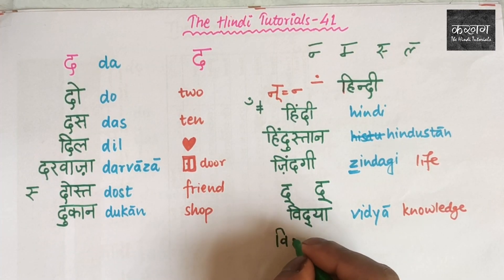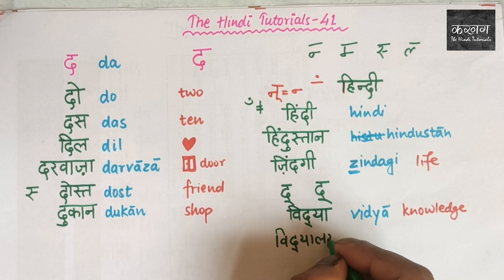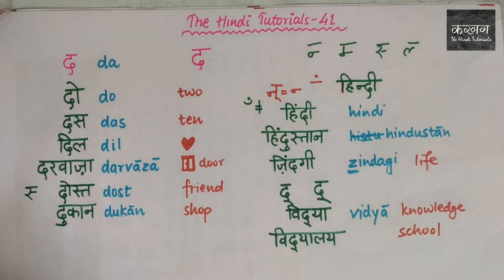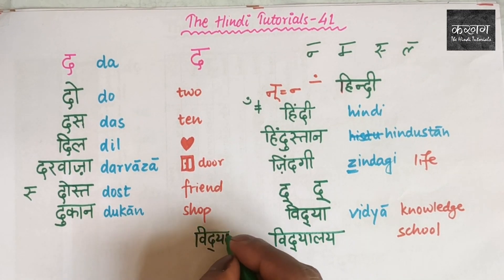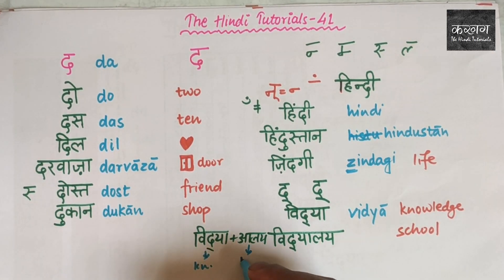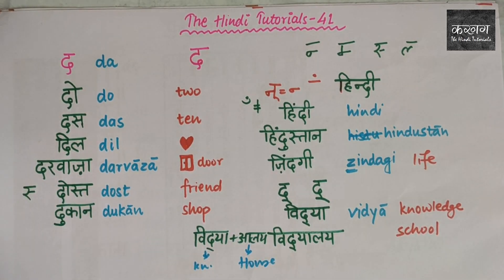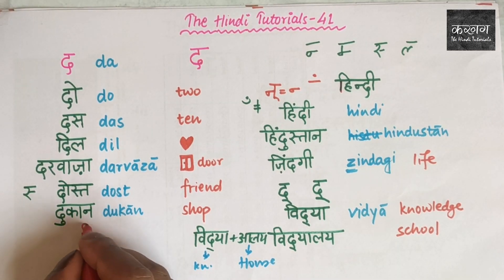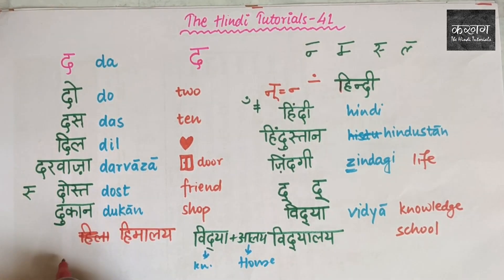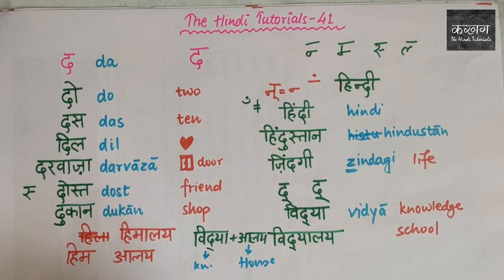A similar word is 'Vidyalay'. Vidya means knowledge and 'alay' means house — so Vidyalay is a house of knowledge, meaning school. Similarly, you can find the word 'Himalaya'. The first part 'Him' means snow, and 'alay' means house. So Himalaya literally means a house of snow, and Vidyalay literally means a house of knowledge.